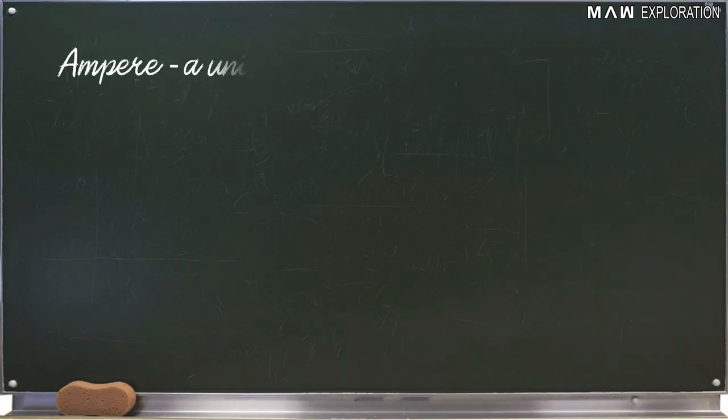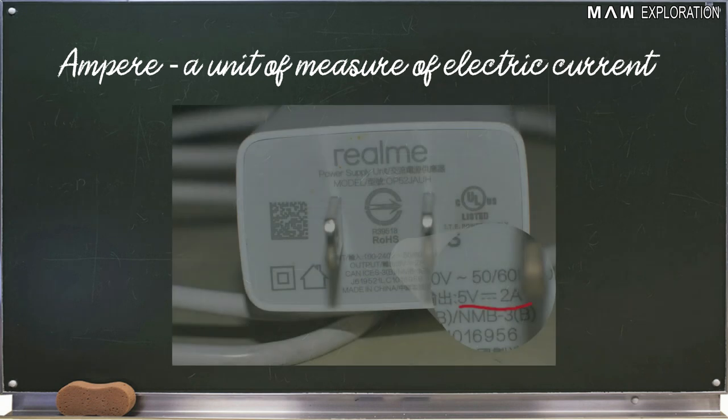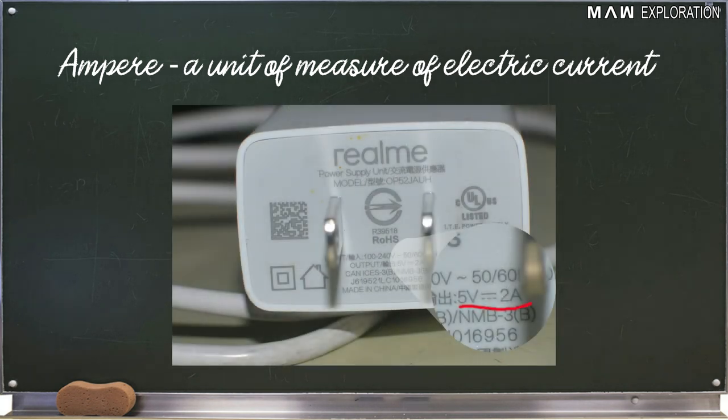Number one, ampere. Ampere is a unit of measure of electric current. Pause this video and take a look at your mobile phone charger ampere rating. Mine says 2 ampere, meaning 2000 milliampere of current or electrons are flowing on my charger going to my cell phone. What's yours?